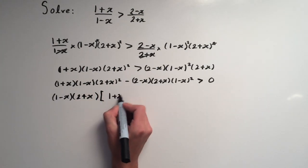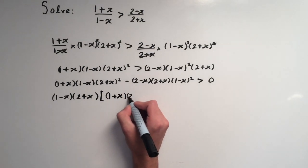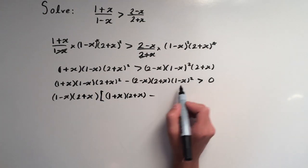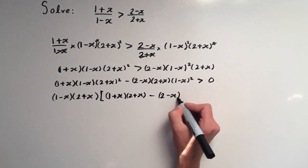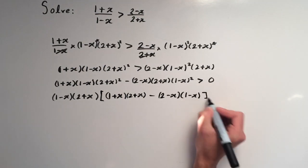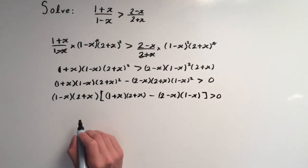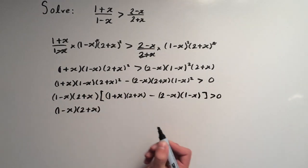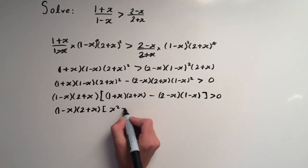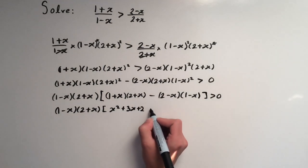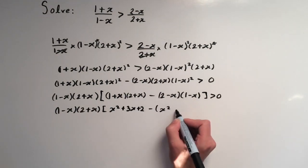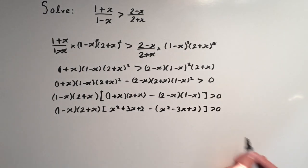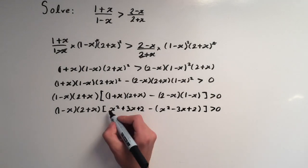We're left with (1-x)(2+x) times the square bracket: [(1+x)(2+x) minus (2-x)(1-x)], all greater than zero. Expanding the inner brackets gives x²+3x+2 minus x²-x+2.